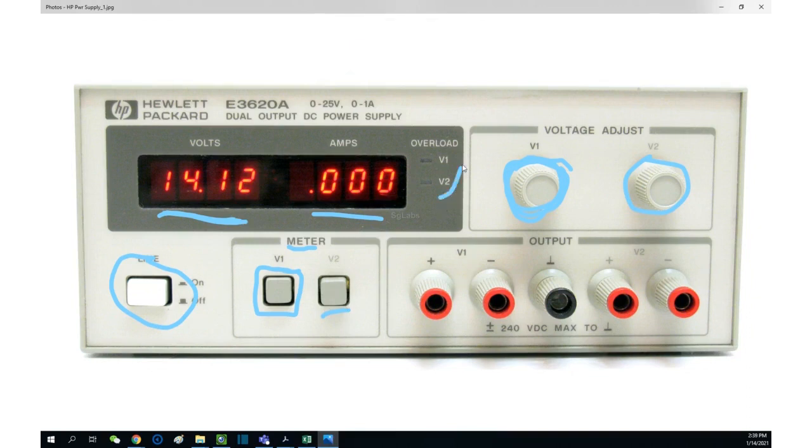Here is also very important. Don't underestimate these two indicator lights. They are the overload lights. Whenever the light here is on, it means V1 is overloaded. If this light is on, it means V2 is overloaded.